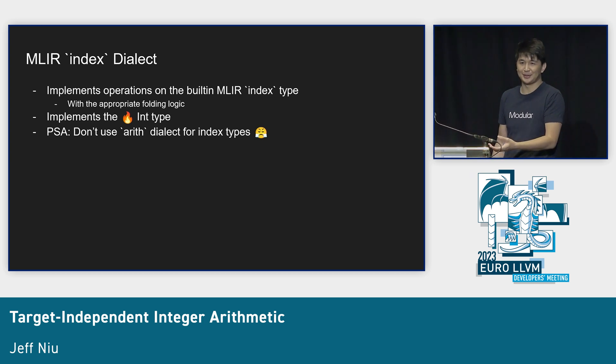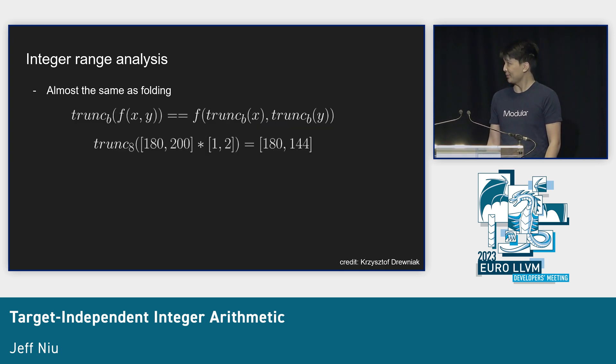Somebody realized the index dialect on MLIR wasn't folding index computations correctly because it was doing it at 64 bits. The MLIR index dialect actually backs the Mojo int type. The PSA here is: don't use the arithmetic dialect for index computations. We can apply the same logic to integer range analysis, work done by Christoph.